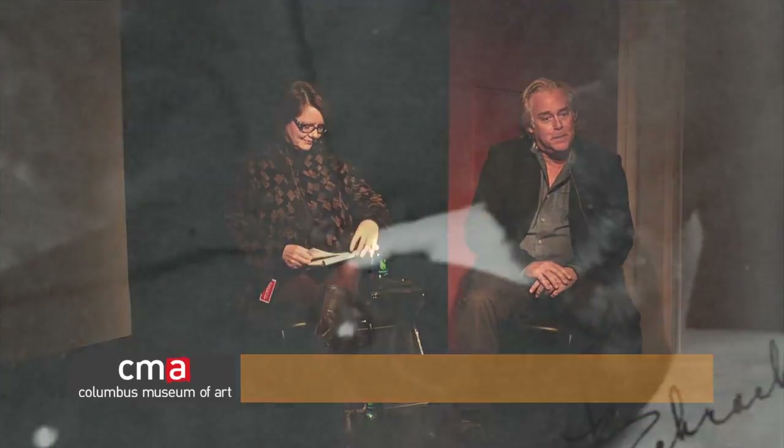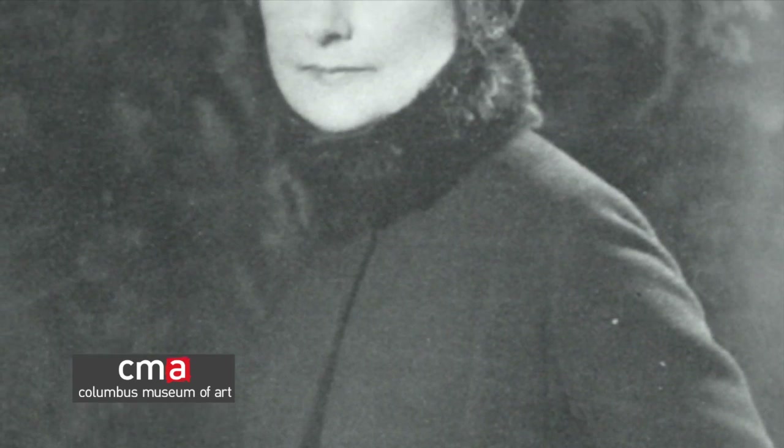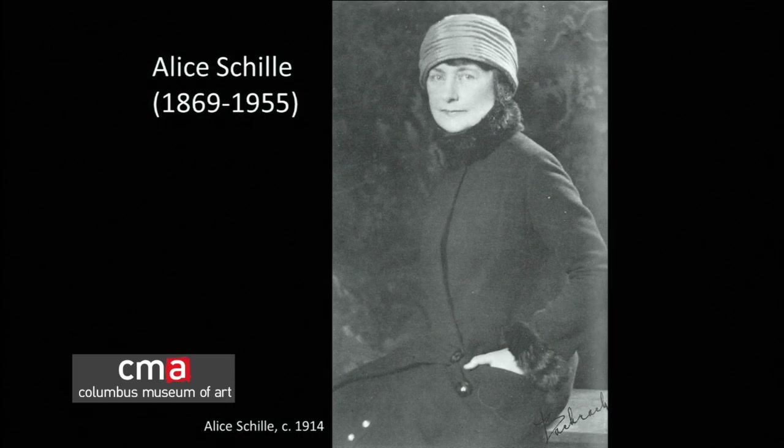I'll let Jim talk a few minutes about this, and then we'll branch out into some new stuff. Alice was one of six children of Peter and Sophia Schilly. She was born in 1886 in Columbus, in the downtown area where she grew up on Friend Street, which is now Main Street.